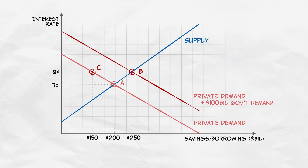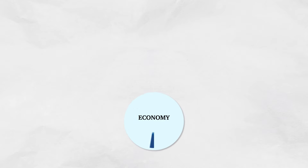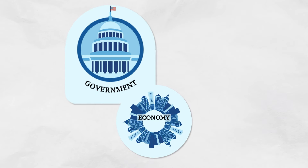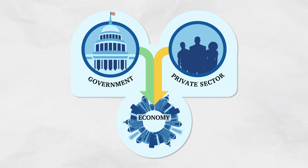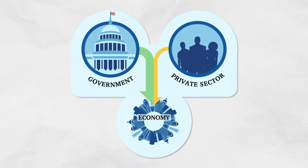So when the government borrows $100 billion, it crowds out private investment and private consumption. Now, this assumes that the economy is operating at full employment. If the economy is in a recession, crowding out may not be an issue.